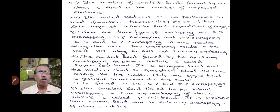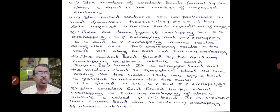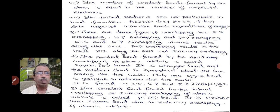There are three types of overlapping: namely SS overlapping, SP overlapping, and PP overlapping. SS and SP overlapping always results in overlapping along the axis. PP overlapping can occur in two ways — one is along the axis and another is sideway overlapping. The covalent bond formed by the axial overlapping of atomic orbitals is called a sigma bond. It is a stronger bond and the electron cloud is symmetrical about the line joining the two nuclei. Only one sigma bond is possible between the two nuclei. It is found in SS, SP, and PP overlappings.